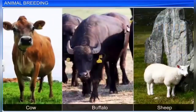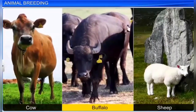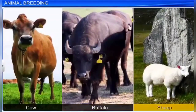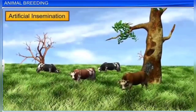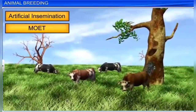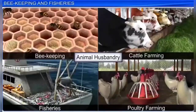MOET is widely carried out in animals such as cattle, buffaloes, and sheep. Different techniques such as artificial insemination and MOET, along with various inbreeding and outbreeding methods, are employed in animal breeding to produce offspring with superior qualities. Animal husbandry also includes beekeeping and fisheries, in addition to cattle and poultry farming.